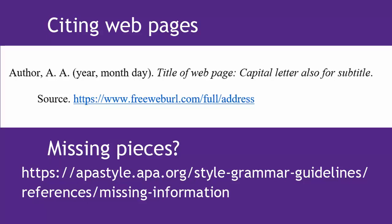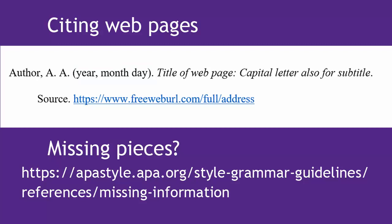Here's the basic format for a web page. First is the name of the author or authors, then the date the information on the page was last published or updated. Because websites are frequently updated, include as much detail as the page gives you — if it tells you the year, month, and/or day, include all of that, formatted like this. Then include the title of the specific page you are actually on in italics, then the name of the source or hosting organization if it's different from the author, and finally the stable link for the page.